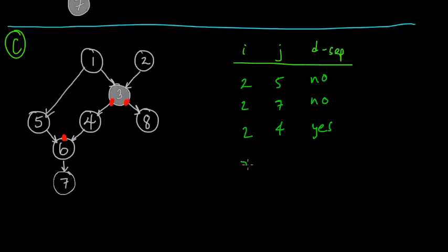Let's do 7 and 8. We can't go 7, 6, 4, 3, 8 because we're blocked at both tails there. Can we go around? 7, 6, 5, 1, 3, 8 — we can't get back down to 8 because this is blocked. Since there's a stop sign at 8, everything would be d-separated from 8. So 7 and 8 are also d-separated.